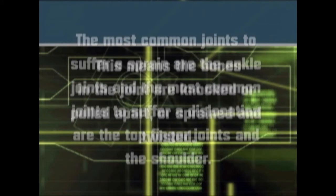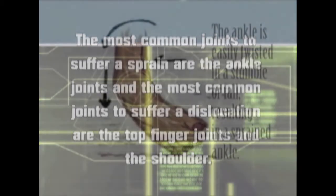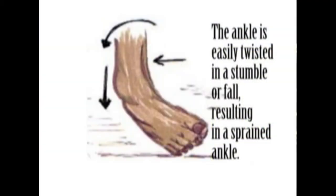The most common joints to suffer a sprain are the ankle joints, and the most common joints to suffer a dislocation are the top finger joints and the shoulder. The ankle is easily twisted in a stumble or fall, resulting in a sprained ankle.